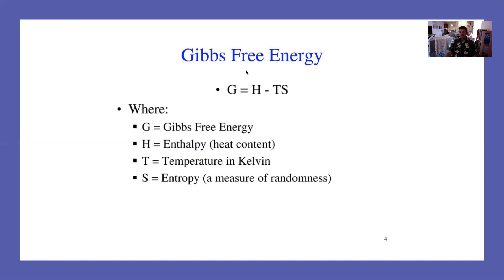Gibbs free energy is going to give us a new tool. Gibbs free energy gets the symbol G and it equals H minus T times S — H being enthalpy, T being temperature, and S being entropy: the heat content and the measure of randomness. This is defined for the system. So the Gibbs free energy of the system equals the system's heat content minus the temperature times the entropy of that system.